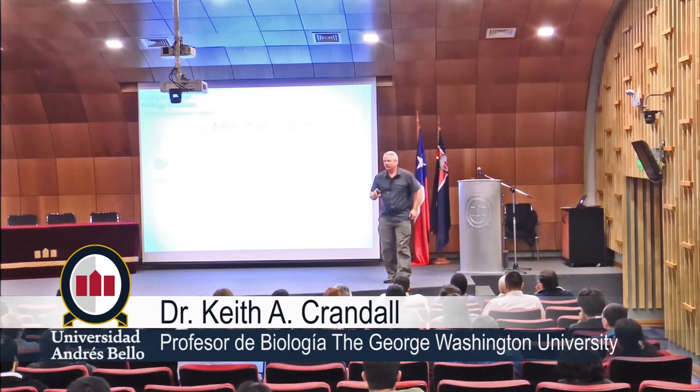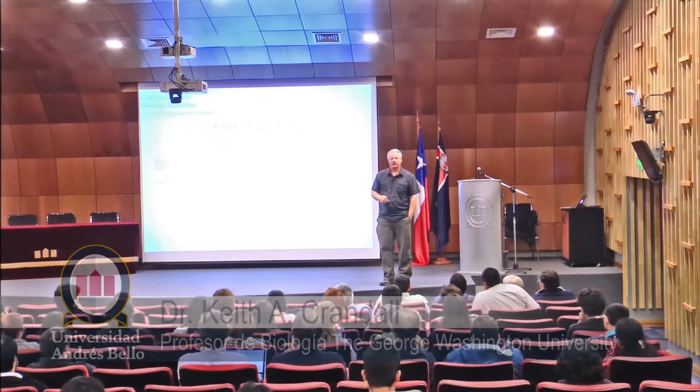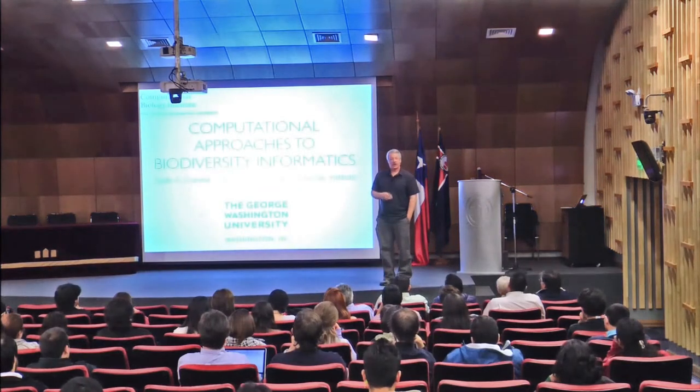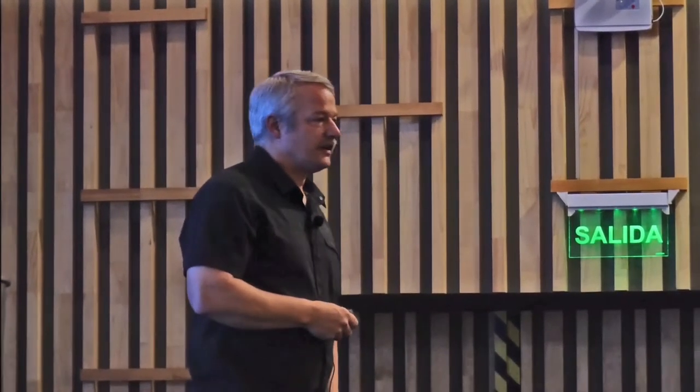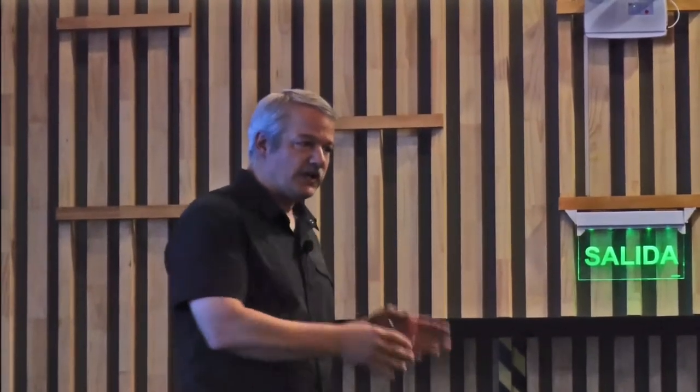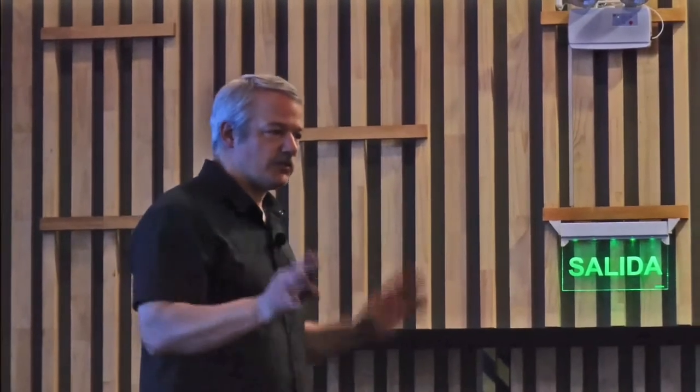I want to do a couple of things with this talk. First, introduce you to our Computational Biology Institute at George Washington University, and then show you some examples of the work that we're doing from my lab, integrating bioinformatics with some questions in both natural history and infectious disease — we're interested in both areas, and I'll show you why.